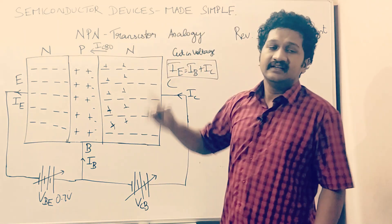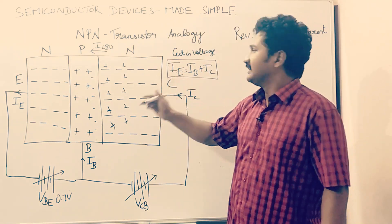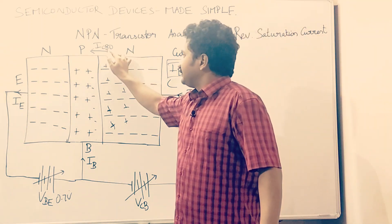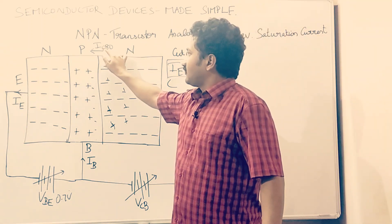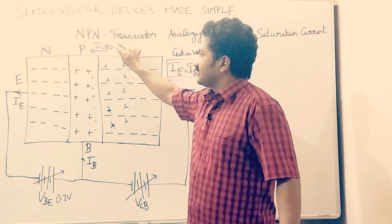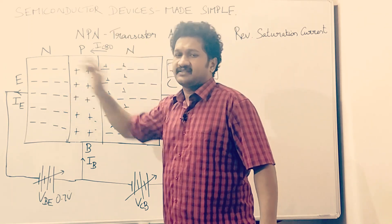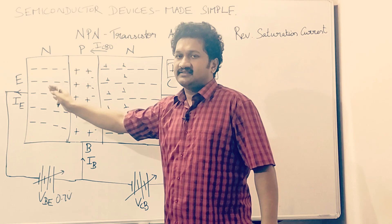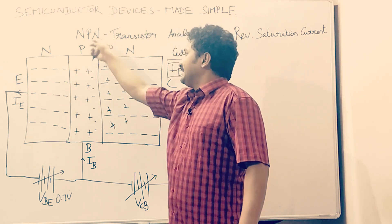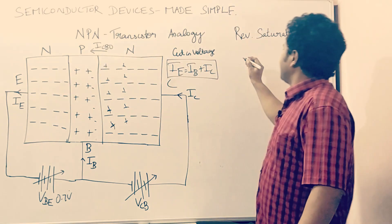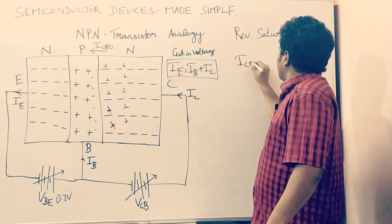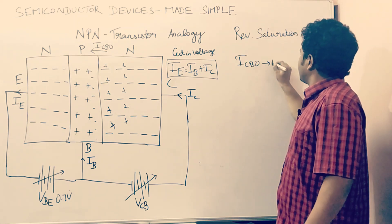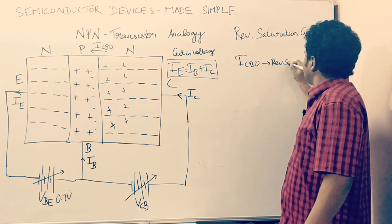ICBO is the reverse saturation current that occurs in the collector-base region. ICB is the reverse saturation current of the collector-base region. The O indicates that the emitter region is open-circuited, meaning the emitter region is not considered. That is the indication of the notation ICBO.